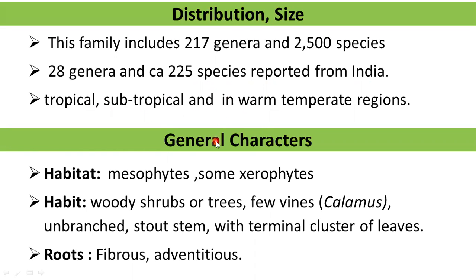General characteristics of this family — Habitat: most of the plants are mesophytes, some are xerophytes. These plants are woody trees, some of them are woody shrubs, and a few of them like Calamus are vines with unbranched erect columnar stems and with a crown of leaves at the apex. The roots are fibrous and adventitious.